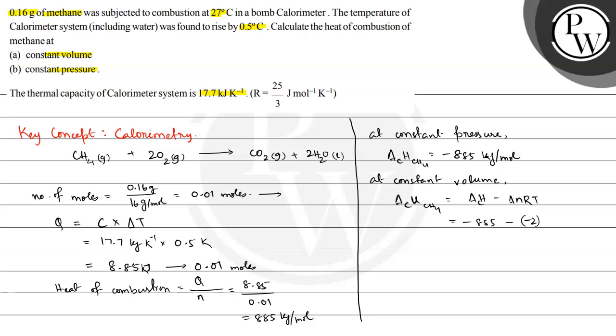This is -2 multiplied by RT, where R is 25/3 and T is 27°C. 27°C equals 273 + 27 = 300 K. So this is -885 minus (-2) × (25/3) × 300. Minus times minus becomes plus, so this is -885 plus 2 × 25 × 300 divided by 3.